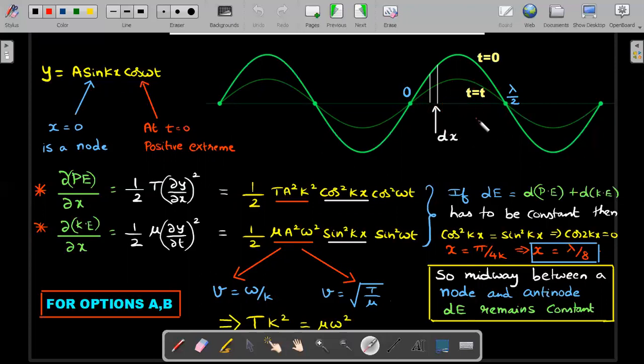Now the dx element that he's talking about: at t equals zero it's here, at t equals t it will be here, and at t equals t by four it comes here. This is my window of dx. Now, how do I represent this sinusoidal function? This standing wave is written as A sin(kx) times cos(omega t).